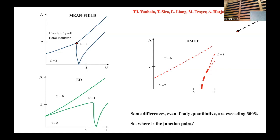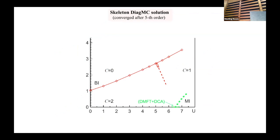Diagrammatic Monte Carlo goes much beyond mean field. The correct phase diagram shows the triple point doesn't fly out of the frame — it shifts from mean field by maybe 50-70%, but the overall structure is preserved. All lines are well-determined, arrow bars are smaller than the symbol size at every point. One line near the strongly correlated regime was not fully resolved at the time — this is an extremely tough part of the Hubbard model. But now the barrier is broken and convergent simulations are understood, though papers are not yet published.